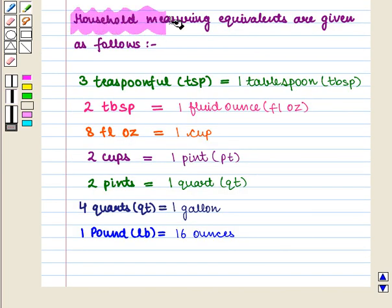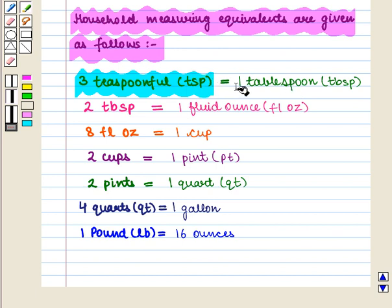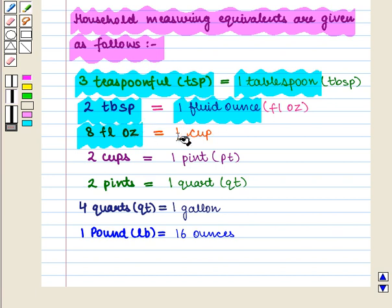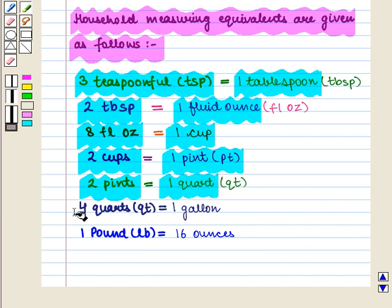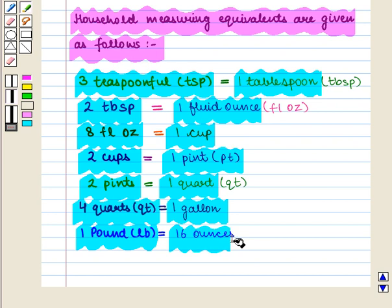Household measuring equivalents are given as follows. Three teaspoonful is equal to one tablespoon. Two tablespoons is equal to one fluid ounce. Eight fluid ounces is equal to one cup. Two cups is equal to one pint. Two pints is equal to one quart. Four quarts is equal to one gallon. And one pound is equal to sixteen ounces.